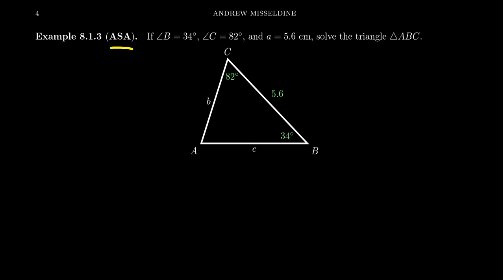That is, we know two angles, and so for this one, let's say we know angles B and C, and we know the side length that's between the two given angles.